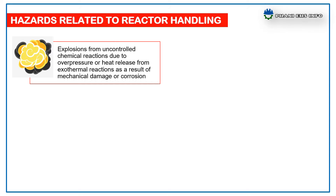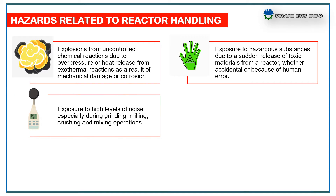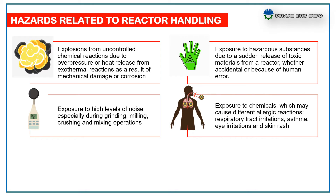Further hazards include: explosions from uncontrolled chemical reactions due to overpressure or heat release from exothermic reactions, or as a result of mechanical damage or corrosion; exposure to hazardous substances due to sudden release of toxic materials from a reactor, whether accidental or due to human error; acute poisoning or chemical burns from extensive use of solvents, acids, bases, and other corrosive chemicals; and exposure to high levels of noise, especially during grinding, milling, crushing, and mixing operations.